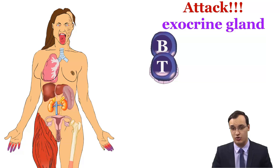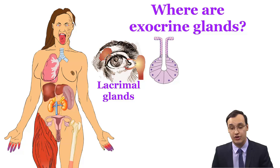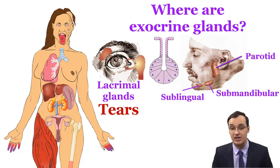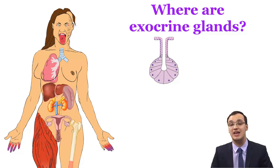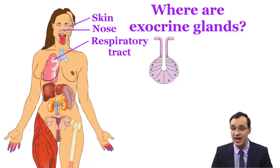Where can we find these exocrine glands? Lacrimal glands, for example, secrete tears. Salivary glands like the parotid, submandibular, and sublingual glands secrete saliva. There are exocrine glands in many more places like in the skin causing sweating, in the nose, respiratory tract, vagina, gastrointestinal tract, and many more.